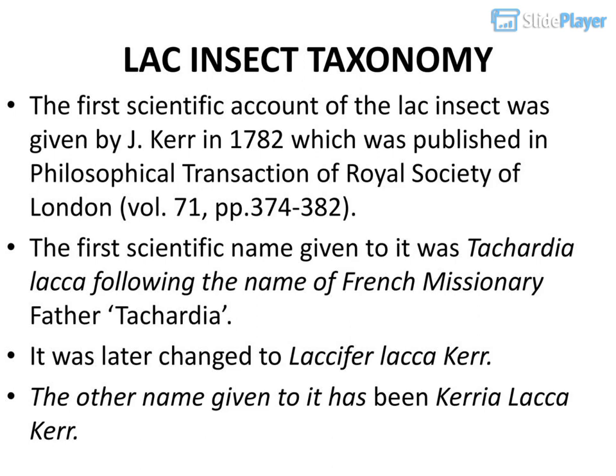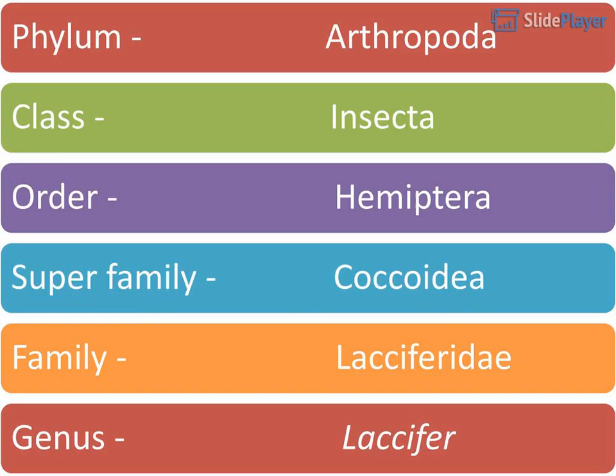The first scientific account of the LAK insect was given by J. Kerr in 1782, which was published in Philosophical Transactions of the Royal Society of London, Volume 71, pp. 374–382. The first scientific name given to it was Tashardia LAK, following the name of French missionary father Tashardia. It was later changed to LAK.